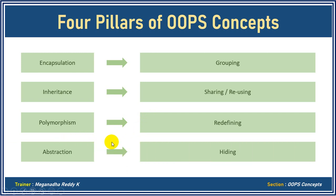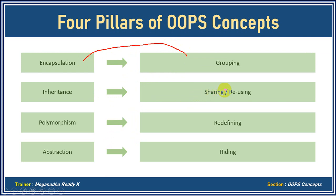The last one is abstraction. Abstraction talks about data hiding from the external world. The functionality implemented in the class will not be known to the external world, but they can still use it without knowing what is exactly inside. So to recap: encapsulation talks about grouping, inheritance talks about sharing or reusing, polymorphism talks about redefining, and abstraction mainly talks about data hiding.